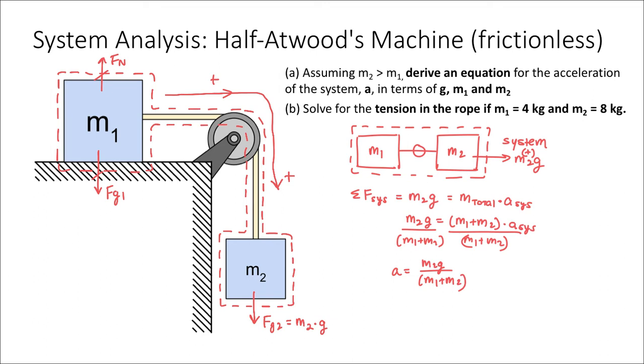For part b, if we're asked to solve for the tension in the rope, given the mass of m1 as 4 kilograms and the mass of m2 as 8 kilograms, I'll plug these in to solve for my acceleration. That would be 8 times 9.8 divided by 4 plus 8, which would give me an acceleration of 6.5 meters per second squared, which I would then use to solve for the tensional force.